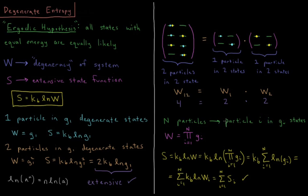If we have n particles, and we have particle i in g_i states, then the degeneracy is the product over all the particles of the degeneracy of each particle. So the entropy of that system would be the Boltzmann constant times the natural log of the total degeneracy, which is the Boltzmann constant times the natural log of the product of the degeneracy of every individual particle.